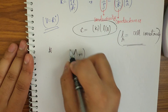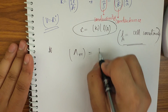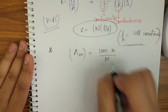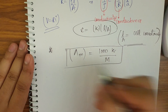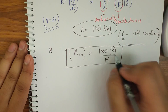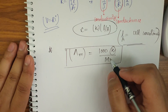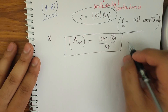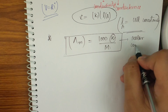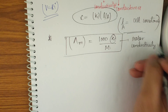Molar conductivity is represented by the symbol λm, which equals 1000k/M. Here k is the conductivity of the solution, and M is the molarity. This is the definition of molar conductivity.